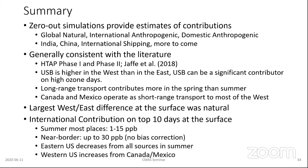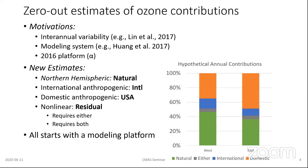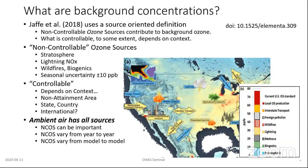The next question: in an early slide showing generic source contributions to ozone, methane was included as a source — can you explain that? Methane in this context is really talking about post-industrial methane. There's naturally occurring methane in the atmosphere reacting with nitrogen oxides — both naturally occurring and anthropogenic — to produce ozone.